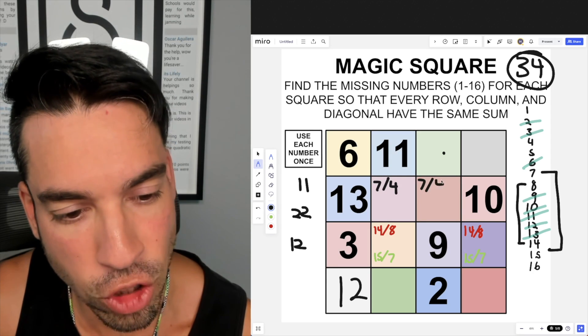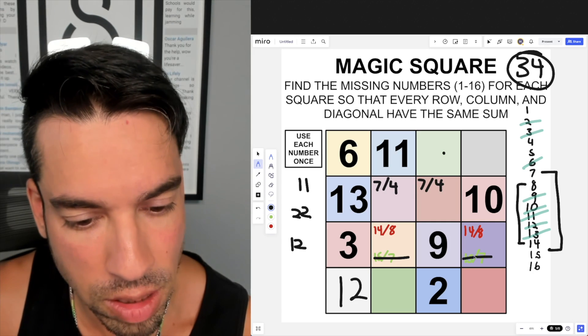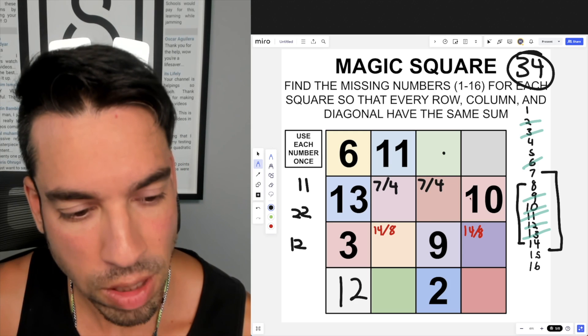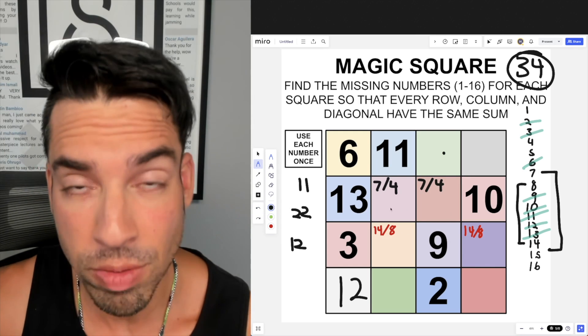Now this is pretty interesting, because I know for a fact 7's got to be one of these two spaces, meaning this is out, this is out. So now I know it's got to be 7, 4, 7, 4 and 14, 8, 14, 8. We'll figure out which number goes exactly where as we flesh more of this out.